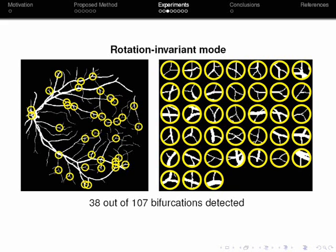In our paper we also show that these filters can be easily applied in rotation invariant mode. This is achieved by the manipulation of some parameter values rather than by configuring new filters for rotated versions of the same pattern. Applying the same filter in a rotation invariant mode we manage to detect 38 out of 107 bifurcations. This is quite a good result however it is not enough as there are still several features that are not detected.